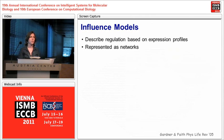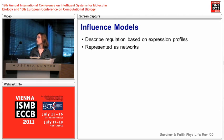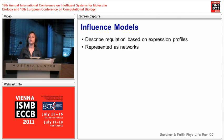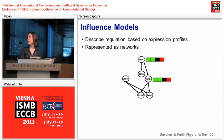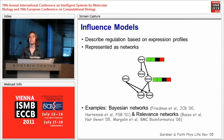Many models have tried to model transcription regulation. One class of such models are influence models that describe regulation based on expression data. They are usually represented as networks where the nodes represent genes and the edges represent some dependency between the expression profiles of the genes. Such models include, for example, Bayesian networks and relevance networks.